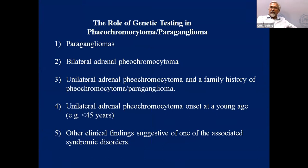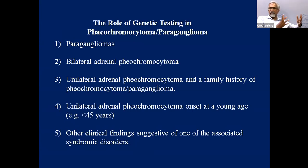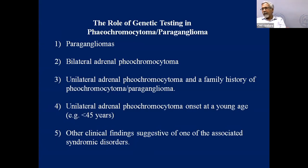We now do genetic testing routinely because it is really important to understand the genetic makeup of these patients. Genetic testing is indicated for: paragangliomas — extra-adrenal neuroendocrine tumors; bilateral pheochromocytomas; unilateral pheo with a family history of pheo or paraganglioma; unilateral adrenal pheo at early onset less than 45 years; or any clinical finding suggestive of an associated syndromic disorder. For example, MEN type 2B may have marfanoid features, and a patient with renal cell carcinoma with an islet tumor should raise consideration of Von Hippel-Lindau syndrome.